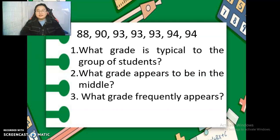In this part, when we say what grades appear to be in the middle, you just have to arrange the numbers here. But since the numbers here are already arranged, you just have to look for the middle value. Number three, what grade frequently appears or what grade usually occurs in the data set? Very good. You're done. Pass your papers forward. To the center aisle. Three, two, one. Thank you.